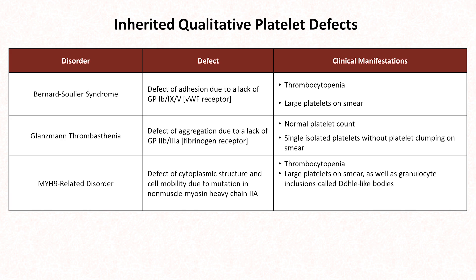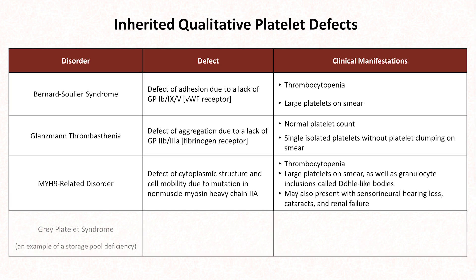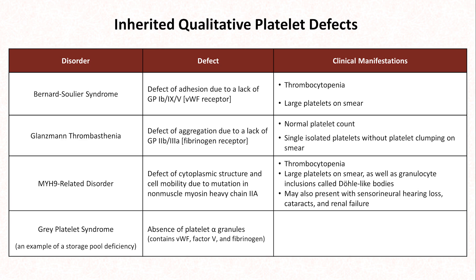MYH9-related disease also has a number of manifestations unrelated to platelets, including hearing loss, pre-senile cataracts, and renal failure. Finally, in gray platelet syndrome, there is an absence of platelet alpha granules, which contain von Willebrand factor, factor V, and fibrinogen. On a blood smear, platelets are not only large but are also gray in color, hence the name.